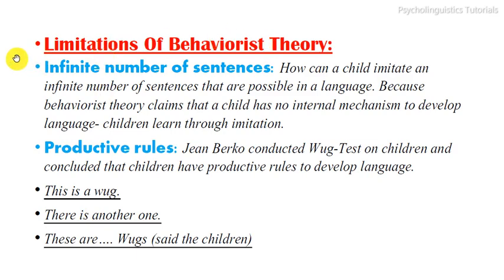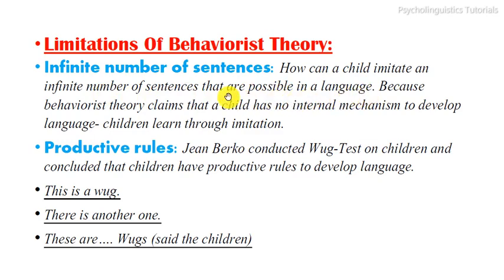The first limitation is the infinite number of sentences. How can a child imitate an infinite number of sentences that are possible in a language? The behaviorist theory claims that a child has no internal mechanism to develop language and that children learn only through imitation.